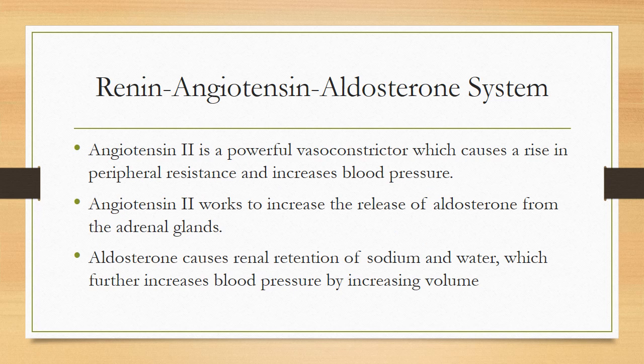Angiotensin 2 is a powerful vasoconstrictor. It causes a rise in peripheral vascular resistance, and when peripheral vascular resistance increases, it will increase blood pressure. Angiotensin 2 also works to increase the release of aldosterone from the adrenal glands. Angiotensin 2 itself, as a vasoconstrictor, increases peripheral vascular resistance which will increase blood pressure.